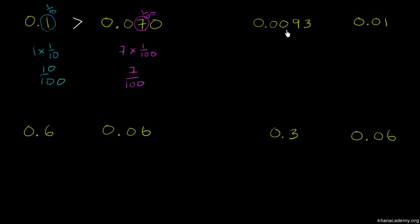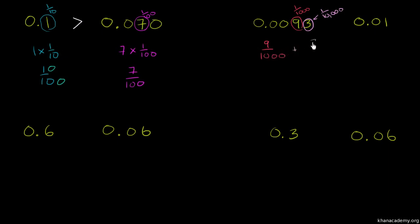So here we have 0.093 and here we have 0.01. This 9 is in the thousandths place. And this 3 is in the ten-thousandths place. So you could literally view this as 9 thousandths plus 3 ten-thousandths. If you just wanted to write it in terms of ten-thousandths, you can multiply the 9 thousandths by 10 over 10, so it becomes 90 ten-thousandths. And if you want to add them together, you could write this as 93 ten-thousandths.